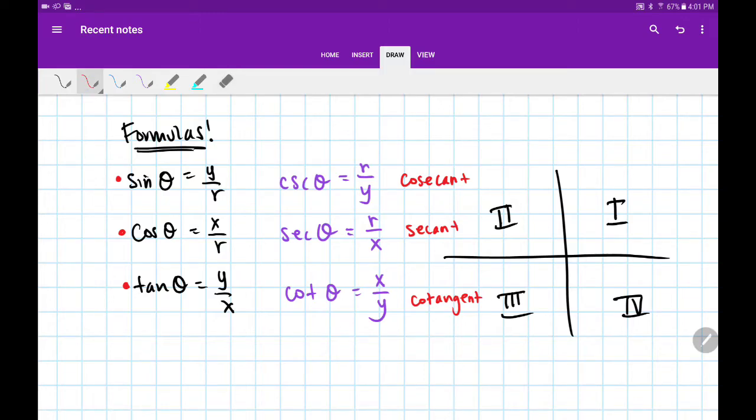They're paired up like this. The reciprocal of sine, y/r, would become r/y, and we call that cosecant. So sine and cosecant are tied together because they're reciprocals of each other.